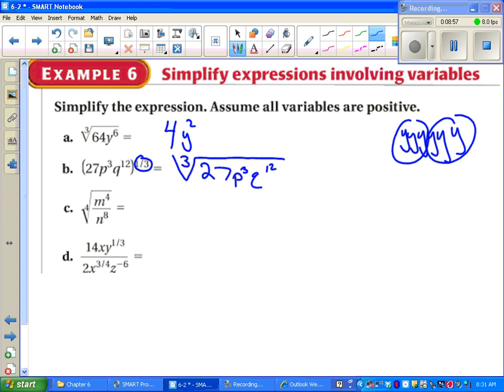Same kind of idea on part B. Figure out the cube root of 27 using a factor tree. Turns out to be 3. How many sets of 3 p's do we have? We have one set. How many sets of 3 q's do we have? We have 4 sets. Nothing left over on the inside. That will change probably on the next slide.